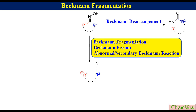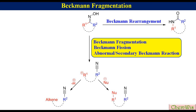The carbocation can eliminate a proton to produce an alkene, or it can combine with a nucleophile if available to produce a substituted product.